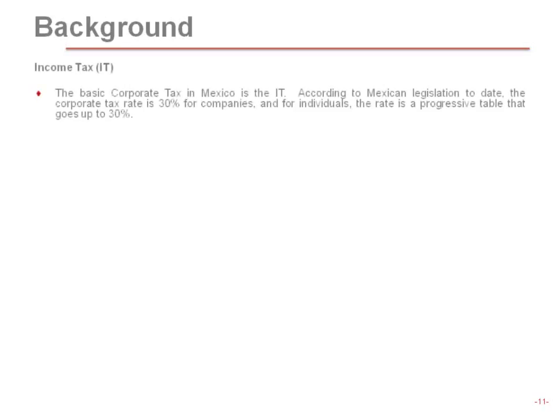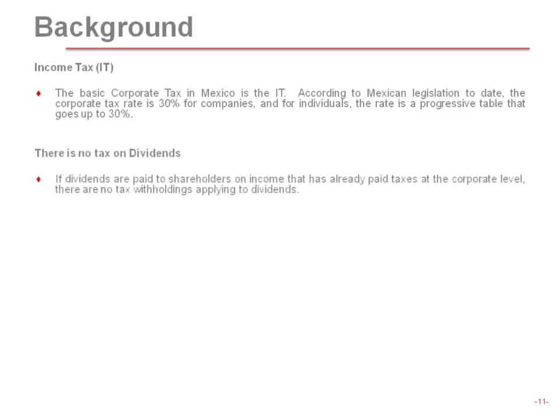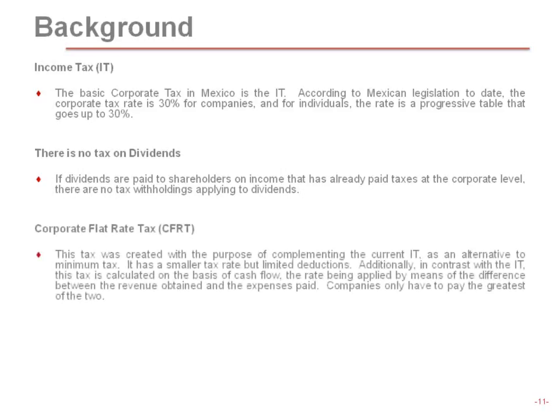Income tax is 30% for companies and for individuals the rate is a progressive table that goes up to 30%. As an interesting comparison to the U.S., there is no tax on dividends. If dividends are paid to a shareholder on income that has already paid taxes at the corporate level, there are no withholdings that would apply to the dividends.